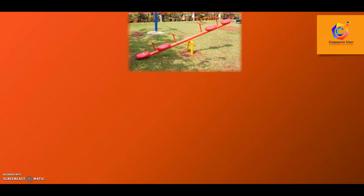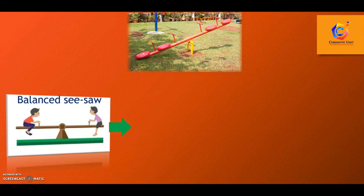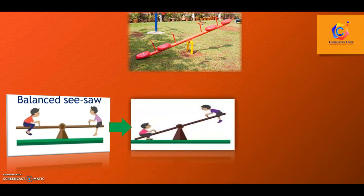Did you ride a seesaw before? If you rode it before, did you look at the design of the seesaw? It's like a balance that wants to keep balance so as not to tip over. If there is an addition of weight on the left side, it will dip to the left. So logically, the seesaw must favour the right side in order to keep itself from tipping over.